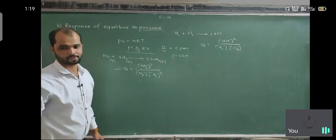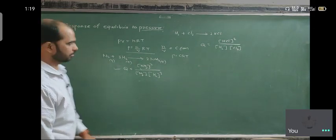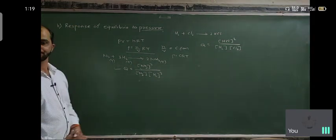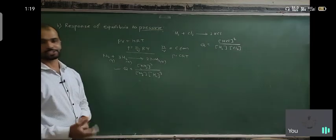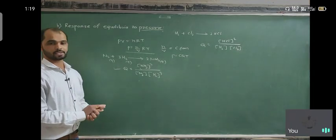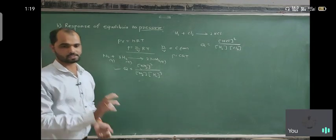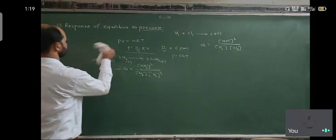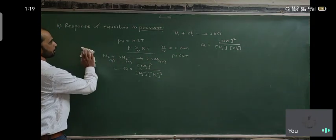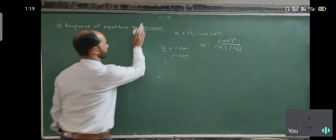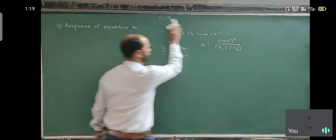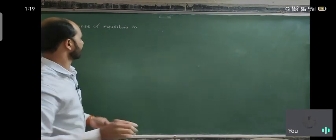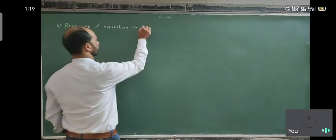So that is the second point. When the number of molecules is different, Q changes and equilibria respond. If Q is greater or less than K, it affects the equilibria — meaning the response of equilibria to pressure. Next, we will discuss the response of equilibria to temperature.